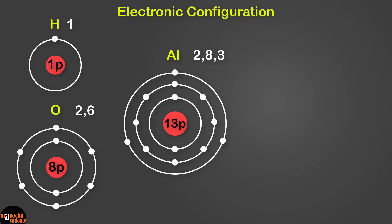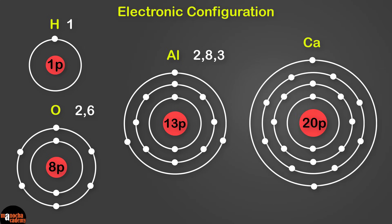And let's also look at calcium, which is in the fourth period with atomic number 20. Its electron configuration is 2, 8, 8, 2. So as expected, calcium in the fourth period has 4 shells.